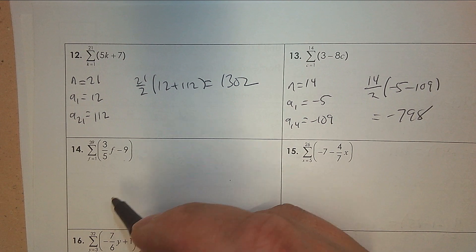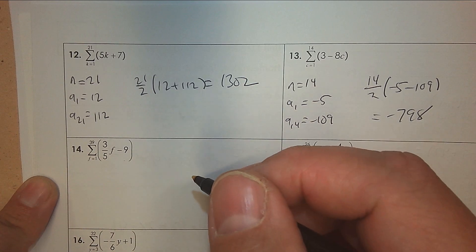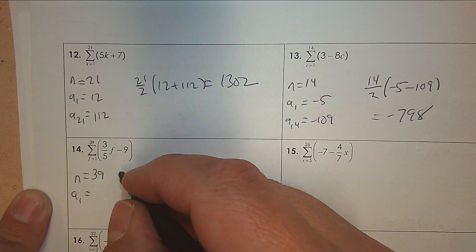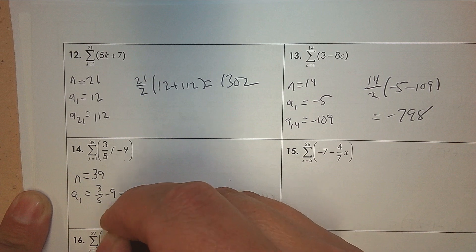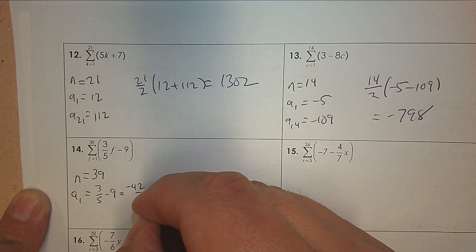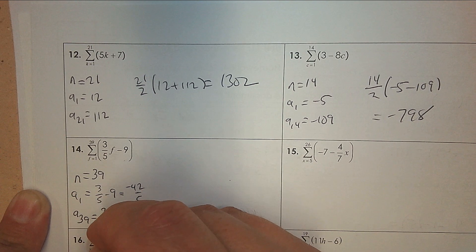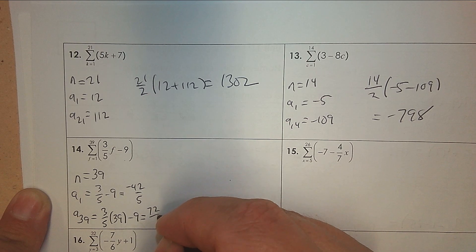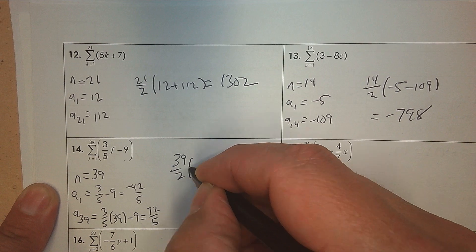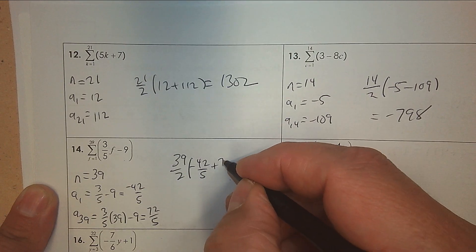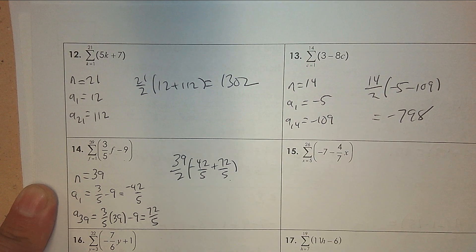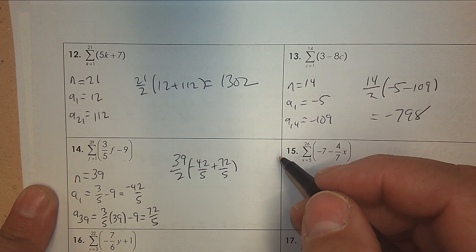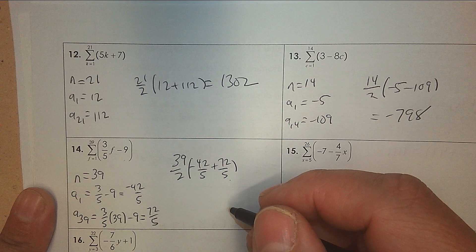That exponent you don't see. I need to know how many terms there are — there's 39. I need the first term: when I plug in 1, that's 3 fifths take away 9. Get common denominators — negative 42 over 5. I need the last term — plug in 39 — and the last term is 72 over 5. Then the setup: use your calculator, 39 over 2, times (first term plus last term). Use the TI-89 — put parentheses around each fraction. The answer is 117.